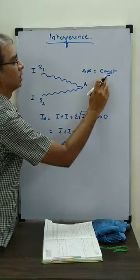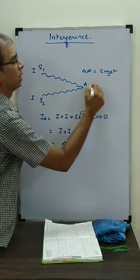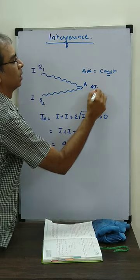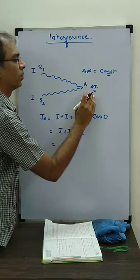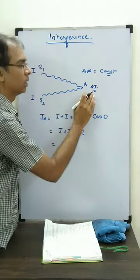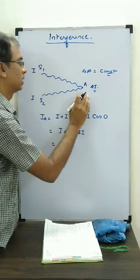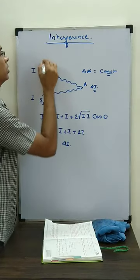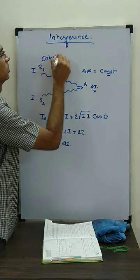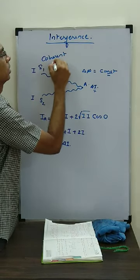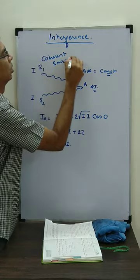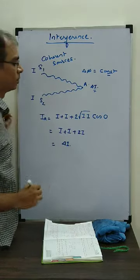Here constructive interference is there, so intensity I am getting is 4I. Will it be 4I forever? It will not change with time because both are coherent sources.